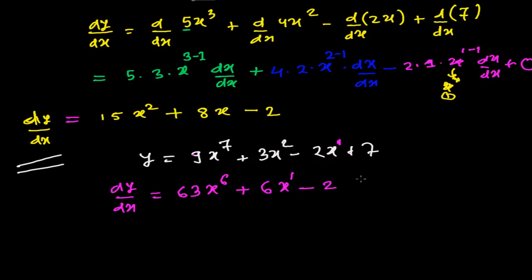See, x to the power 1 minus 1, so I will not write. See, x - I mean to say 1 minus 1, that will be 0, and x to the power 0, that is 1, so I will never write. That's it. It's my answer.